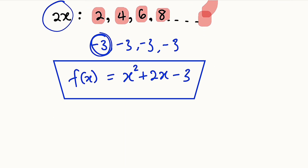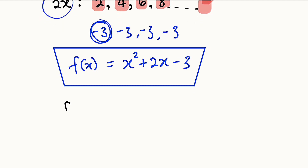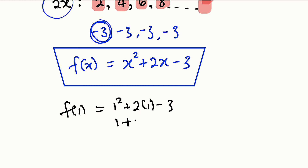We substitute x = 1, 2, 3, and 4 into f(x) = x² + 2x − 3. For f(1): 1² + 2(1) − 3 = 1 + 2 − 3 = 0. So f(1) = 0.